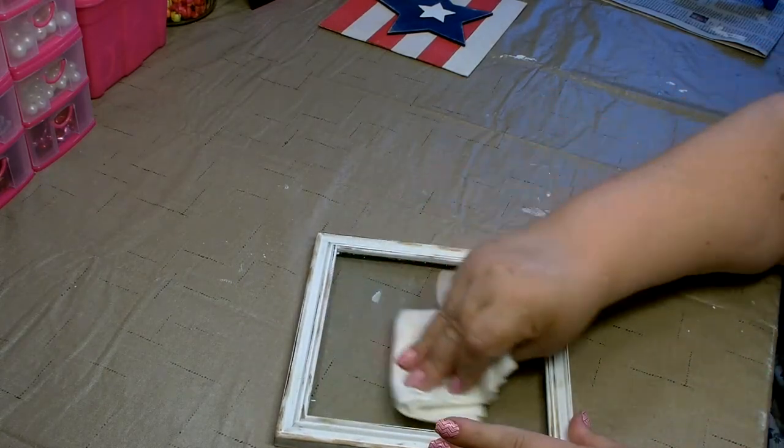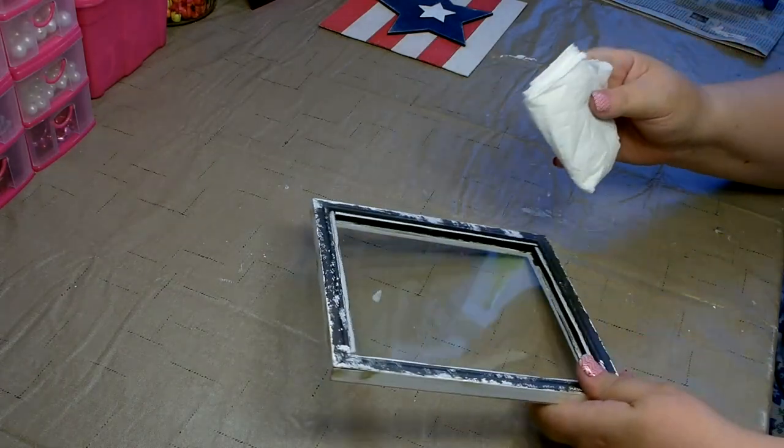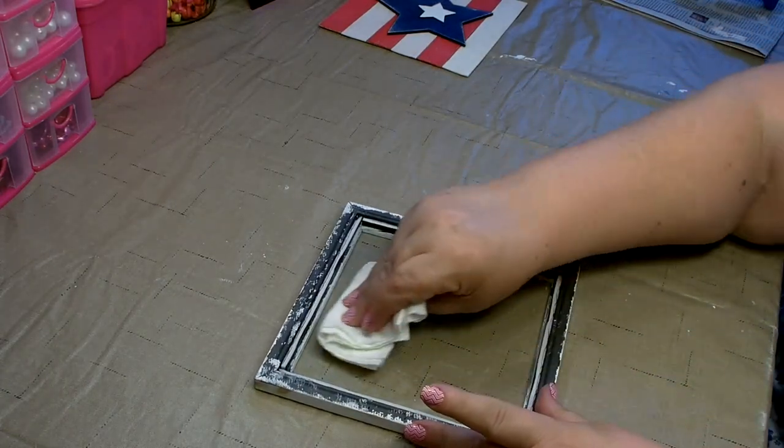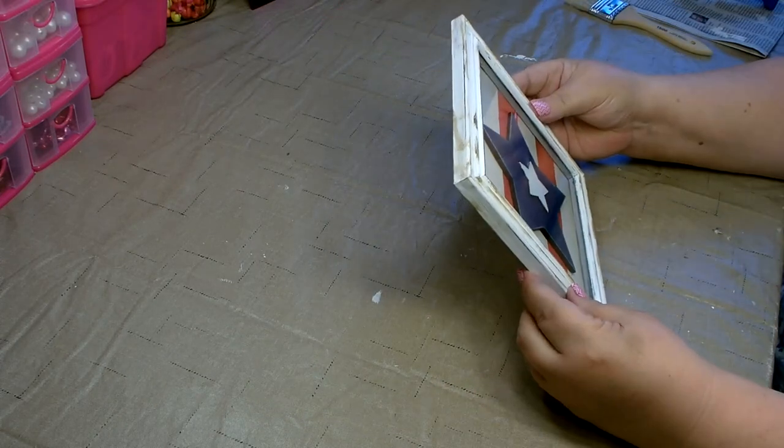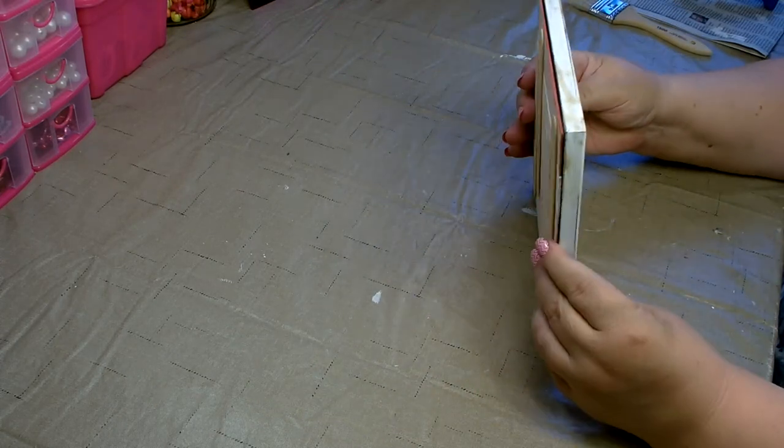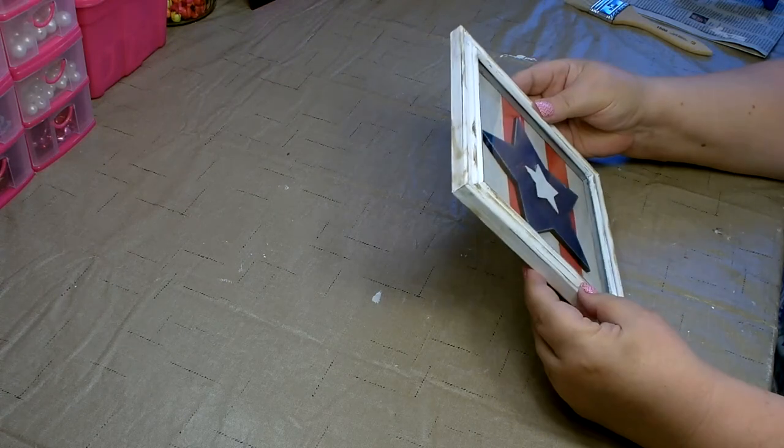Before assembling the project, you want to make sure to wipe down your glass. You will want to center your backing and then attach it using hot glue.